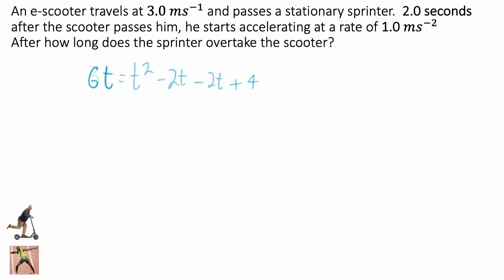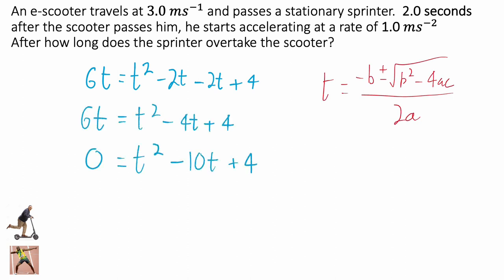With that, I thought, you know what, I can use the quadratic equation here if I just take this a little bit further. Get the 6t over the other side, and all of a sudden it looks like a quadratic. We've got t squared minus 10t plus 4.